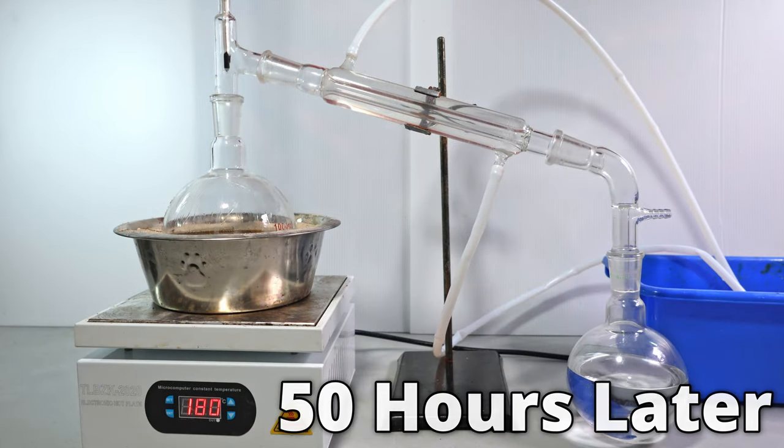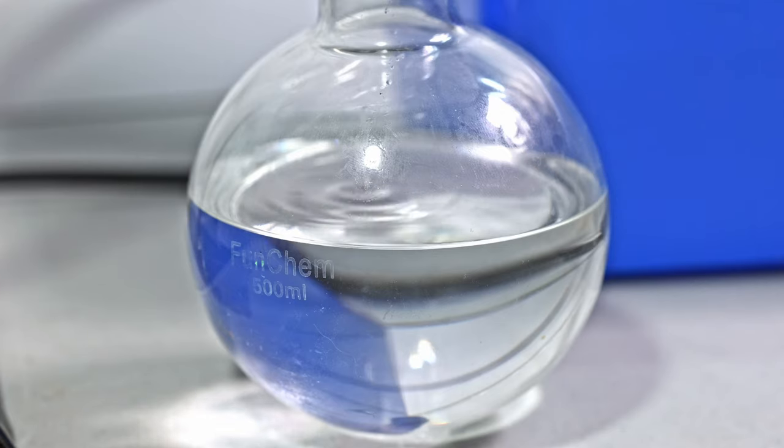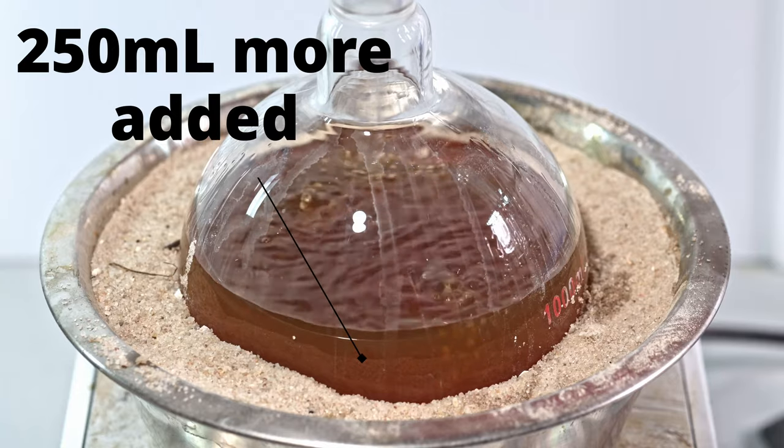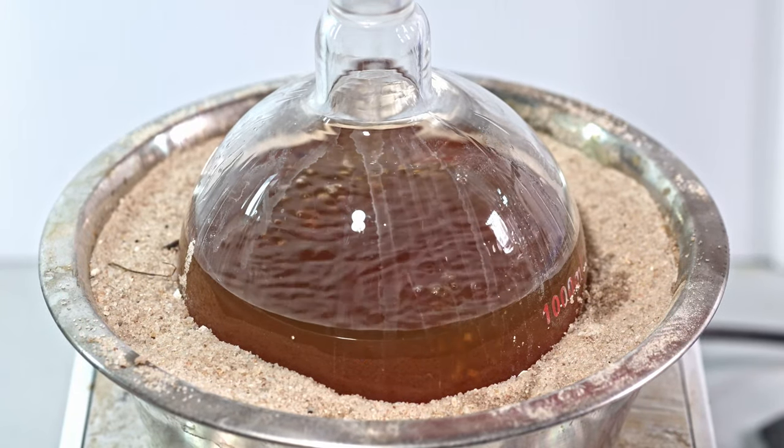50 hours into the experiment, let's see how much ether we have collected. As you can see, we have more than 400 milliliters of ether in the receiving flask. After adding 250 milliliters of alcohol, I'm going to let this thing cook for another 20 hours, and then we're going to obtain our final yield.